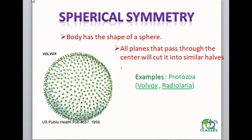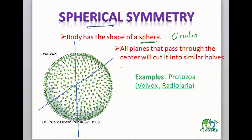Next is spherical symmetry. There are some animals whose body is sphere-shaped or circular. For such a circular surface, any plane that passes through the center of that animal will divide it into two equal halves. So this body plan is called spherical symmetry. Animals like Volvox or Radiolaria, whose body is sphere-shaped, if any axis through the middle center divides them, we get two equal halves — that body plan is called spherical symmetry.